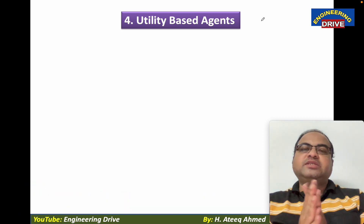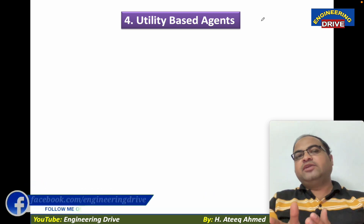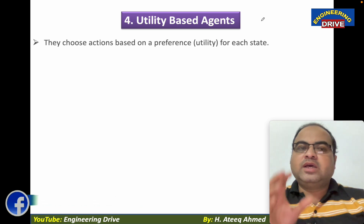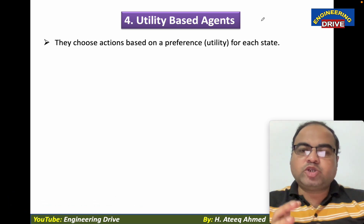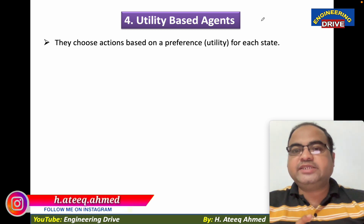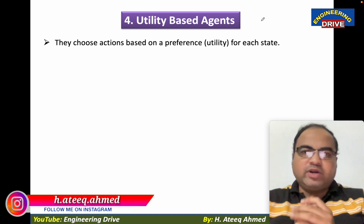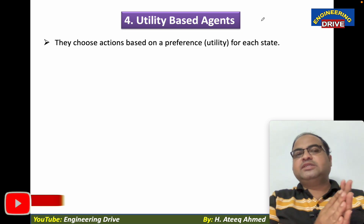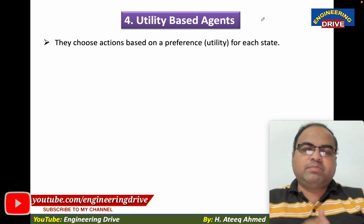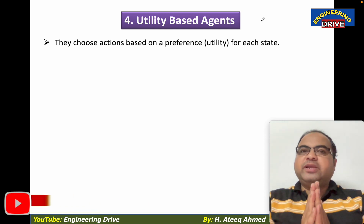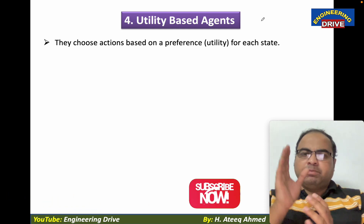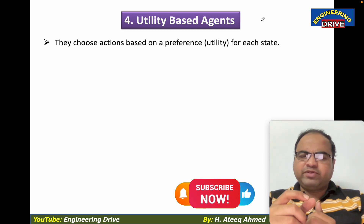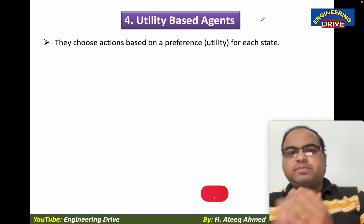How do utility-based agents work, and how are they different compared to the previous three types of agents? They choose actions based on preference or utility for each state. Goal-based agents generate actions based on goals, but utility-based agents don't keep any type of goals — based on preference they will generate the actions, and that preference becomes the utility.